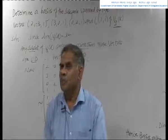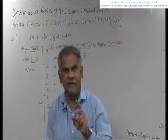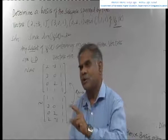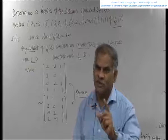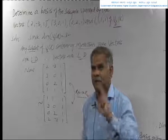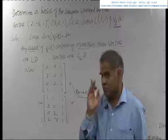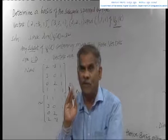Elementary row operations: the first type involves interchanging any two rows. The second type involves multiplying any row by a non-zero constant. The third type involves multiplying a non-zero row by a non-zero constant and adding it to another row. We now reduce the given matrix to echelon form using these operations.